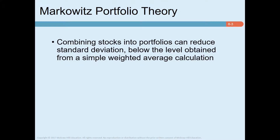First is Markowitz Portfolio Theory. As we learned in the last chapter, although the portfolio return is a weighted average return of individual stocks, portfolio risk is not the weighted average variance or standard deviation of individual stocks. Rather, as we combine stocks in a portfolio we can reduce some risk, so portfolio risk is less than the weighted average variance of individual stocks.